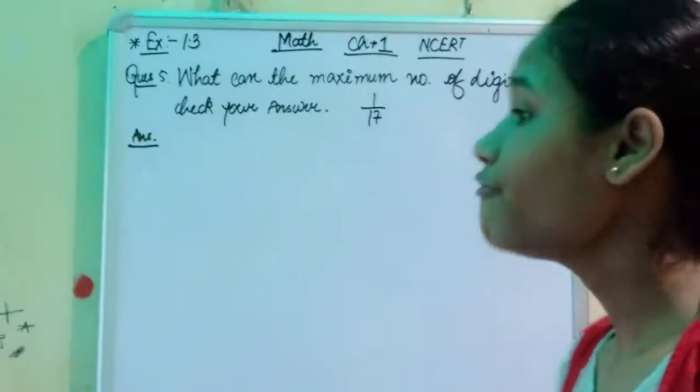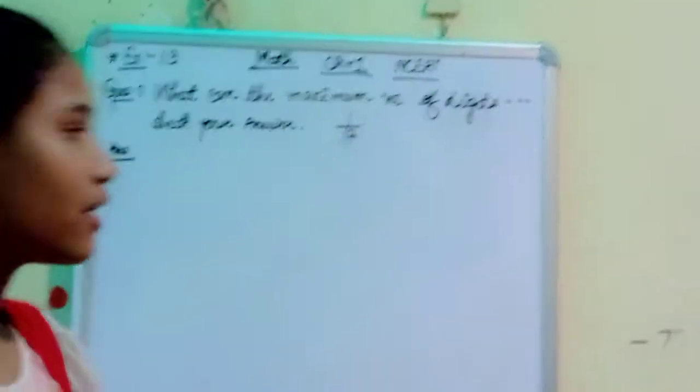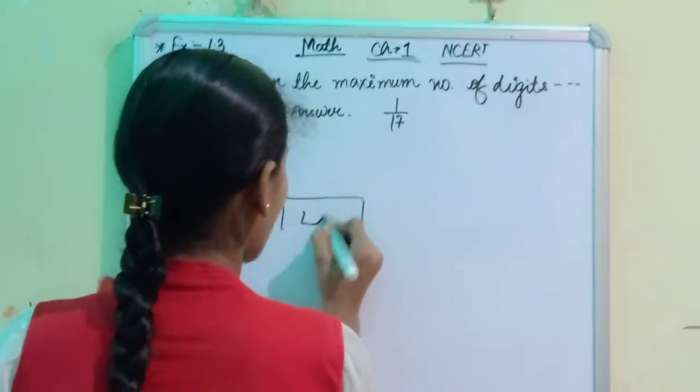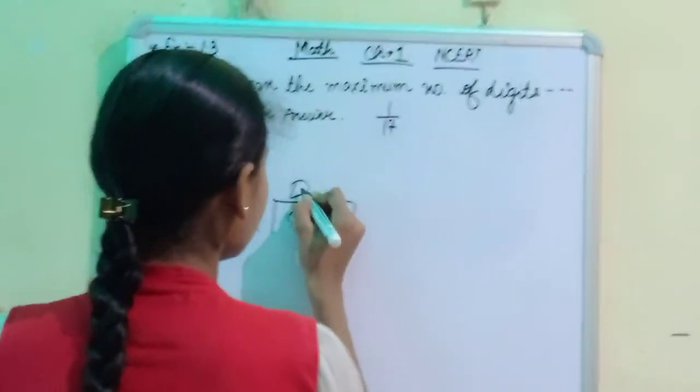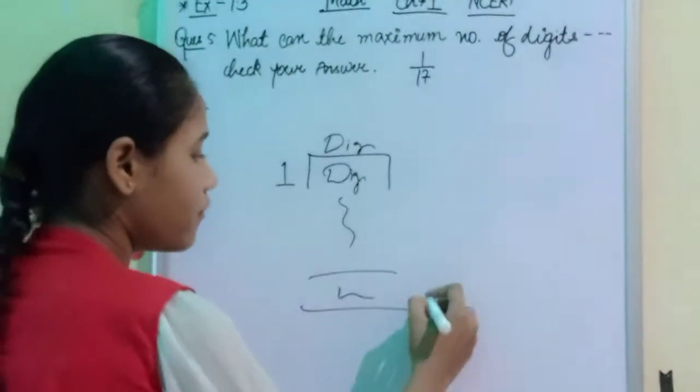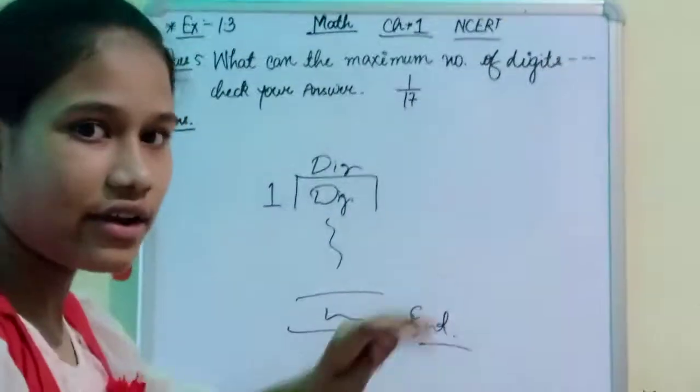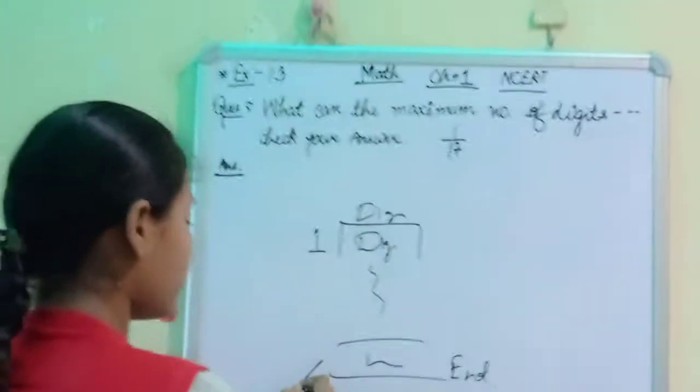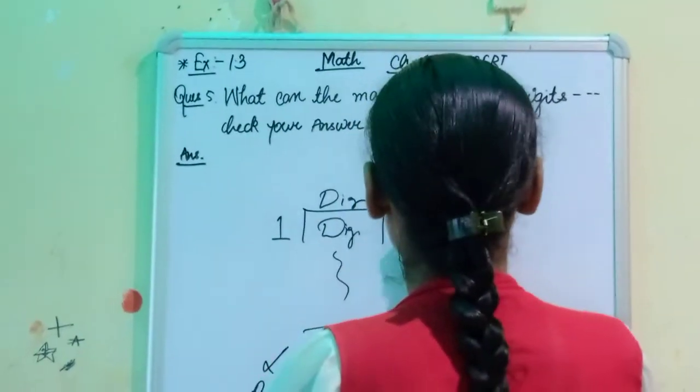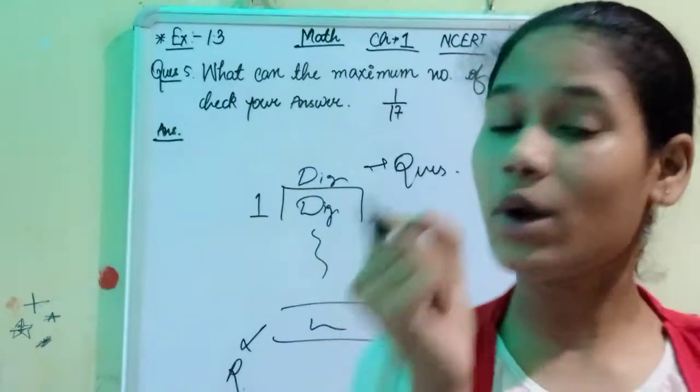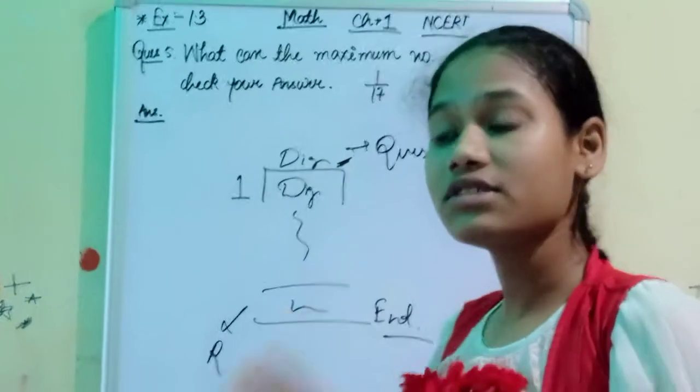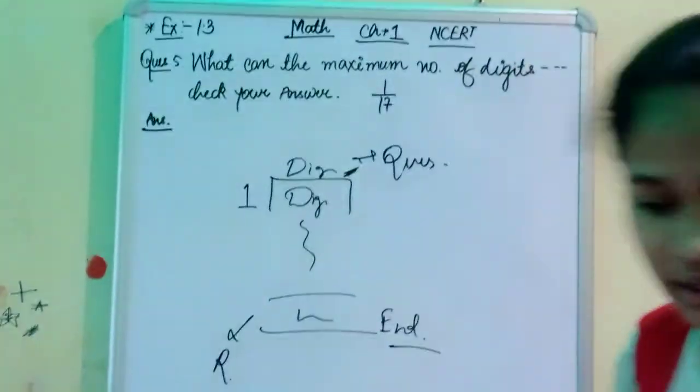What we have to do is find the quotient - the total number of digits we are getting. When you divide, you write digits over here, here, and here. Where you end your division is the remainder, and where you write the answer is the quotient. We have to find the total number of digits, and the question is 1 by 17.